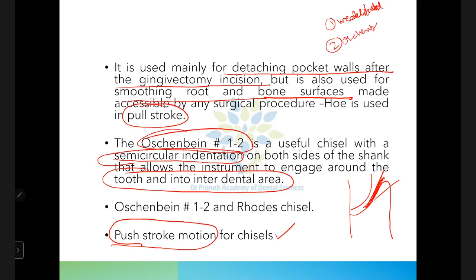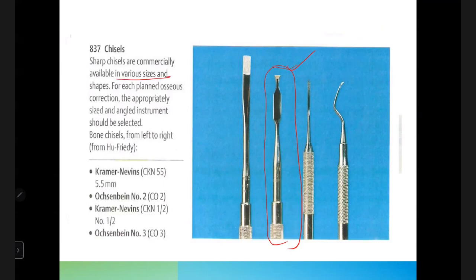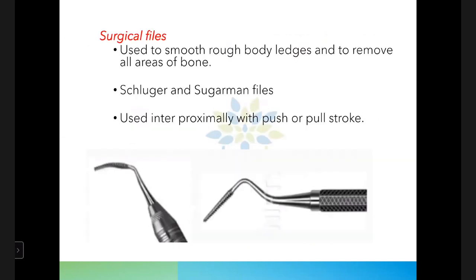To summarize surgical chisels: remember three names — Wedelstaedt chisel, Ochsenbein chisel, and Rhodes chisel. Chisels are used with a push motion, hoes are used with a pull motion. The Ochsenbein chisel picture is important for image-based exam questions. These are available in various sizes and shapes.